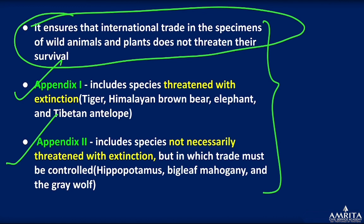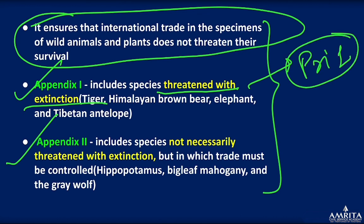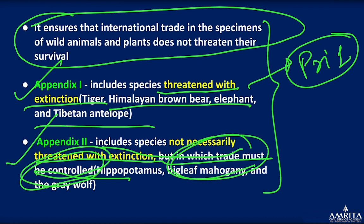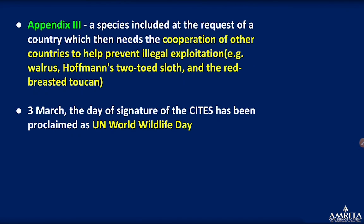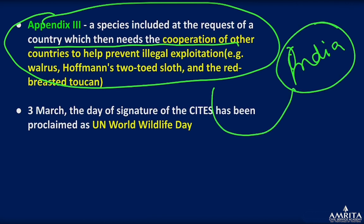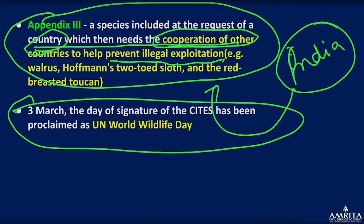The CITES appendixes: Appendix I covers species threatened with extinction — highest priority. Appendix II includes species not necessarily threatened with extinction but whose trade must be controlled so that it does not begin to threaten their survival. Appendix III covers species included at the request of a country that needs the cooperation of other countries to prevent illegal exploitation of that species.